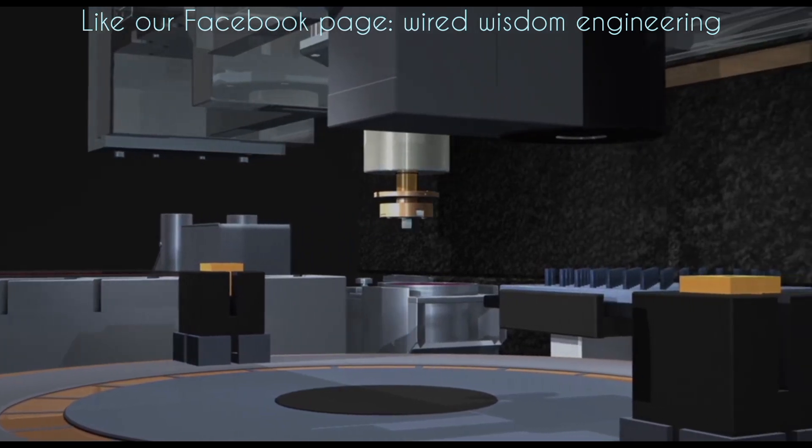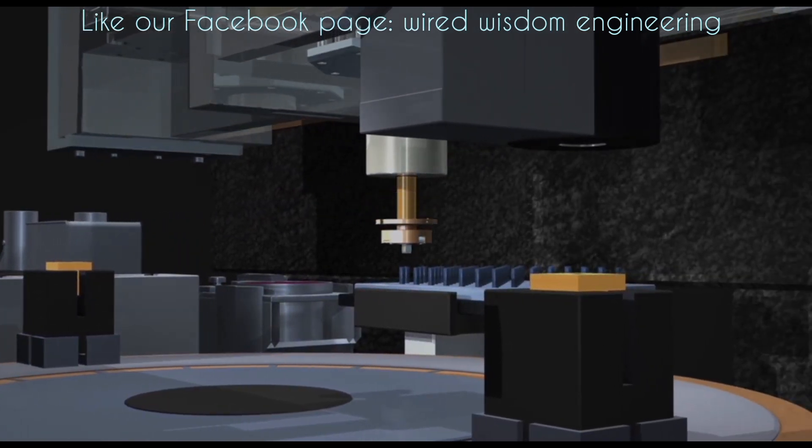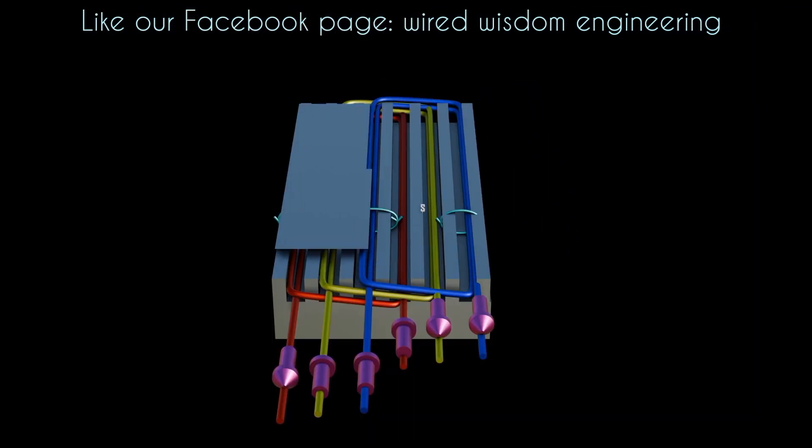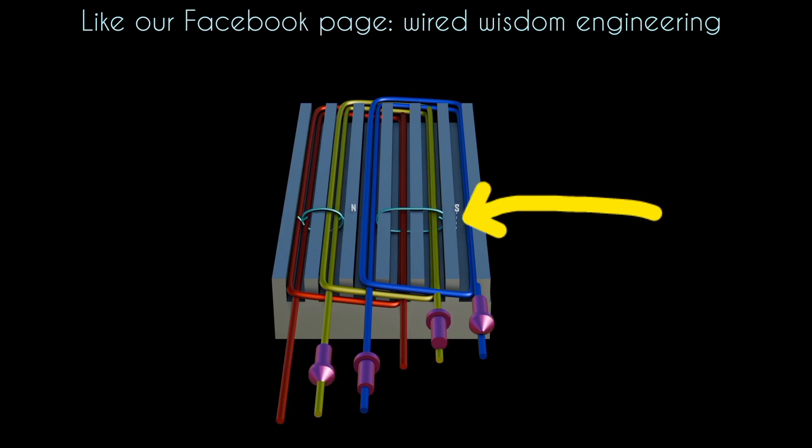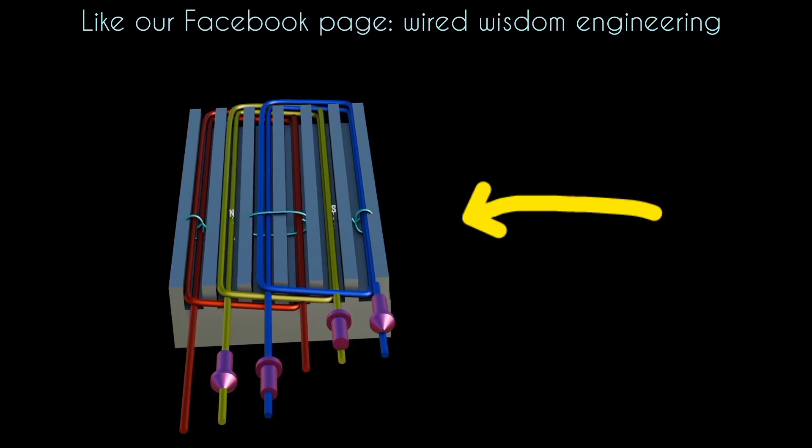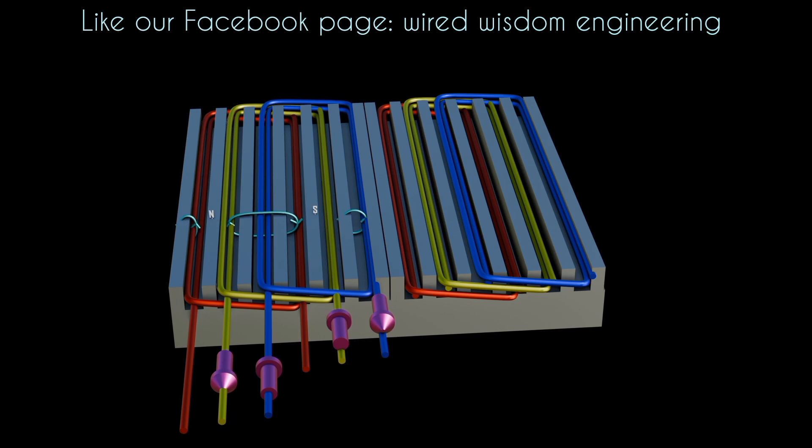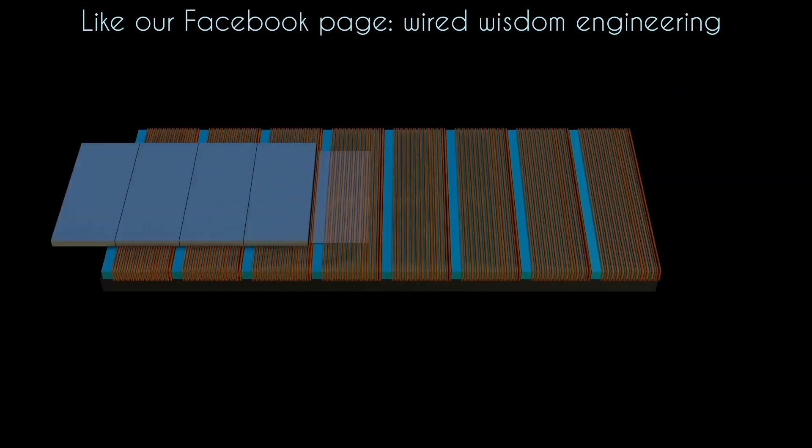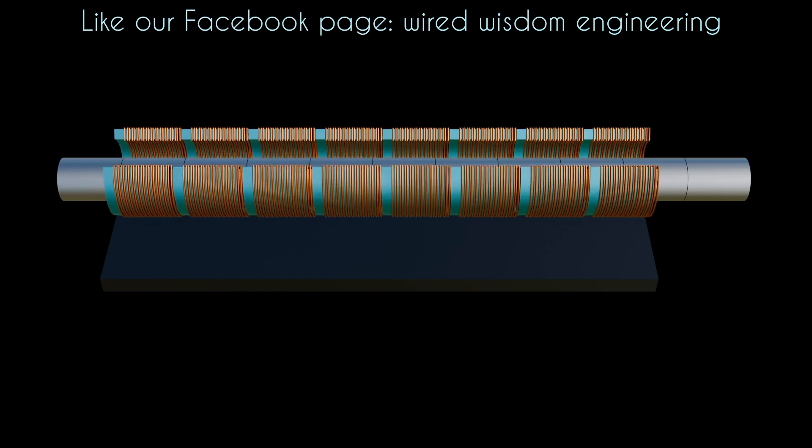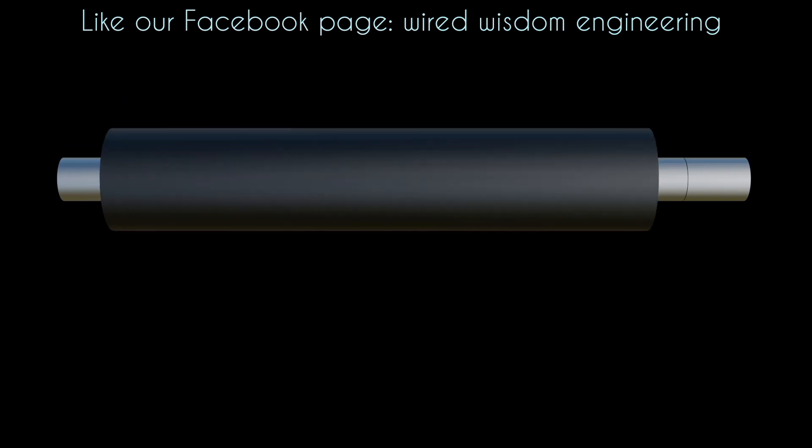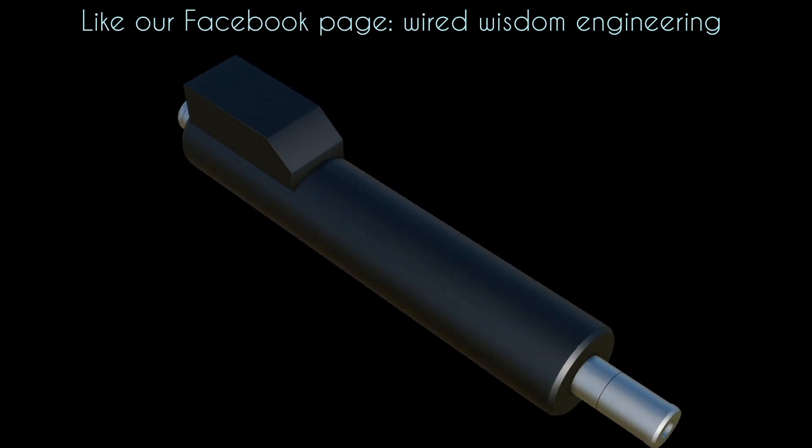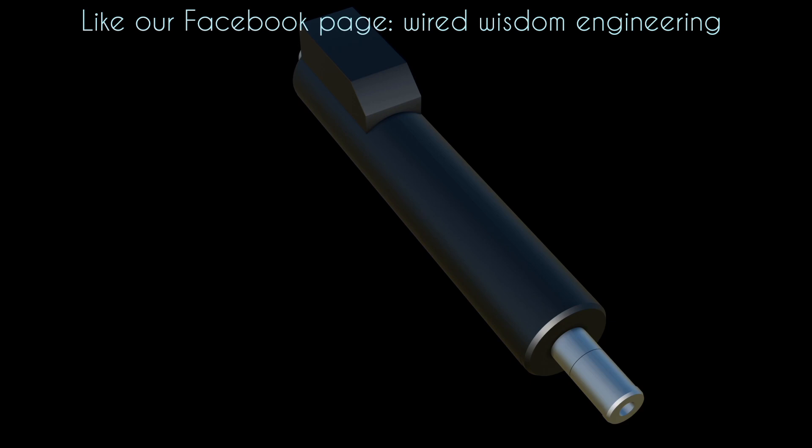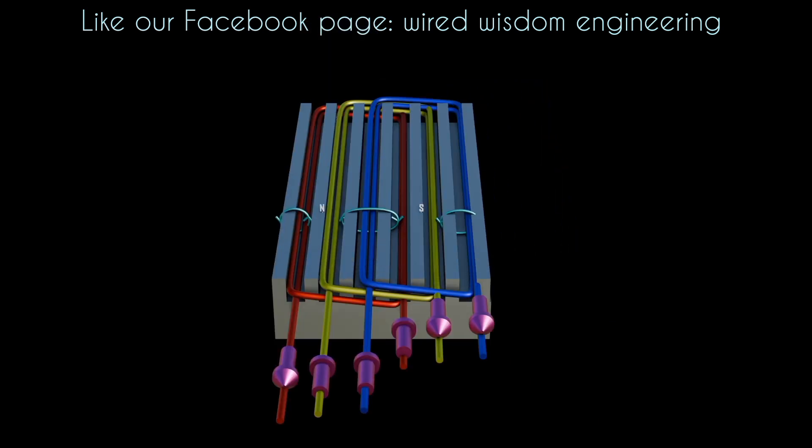In today's video, we want to explore how linear motors work. Next, examine the concept of linearly traveling magnetic field within a magnetic field. Linear motor is an electric motor that has had its stator and rotor unrolled. Thus, instead of producing a torque rotation, it produces a linear force along its length.